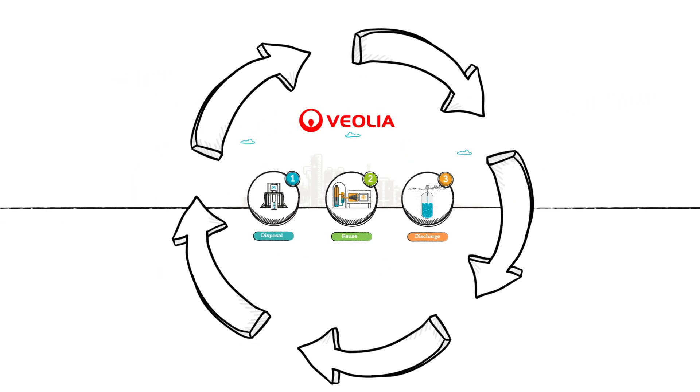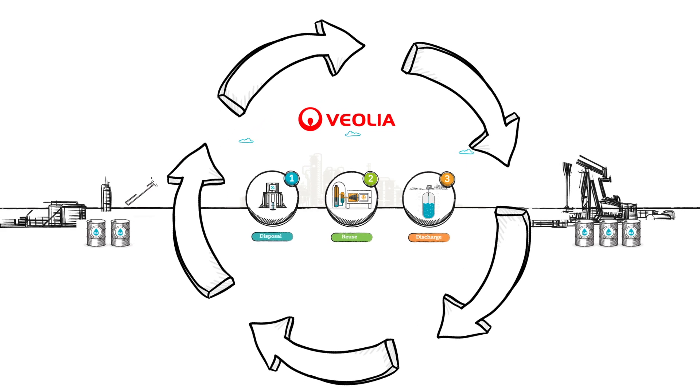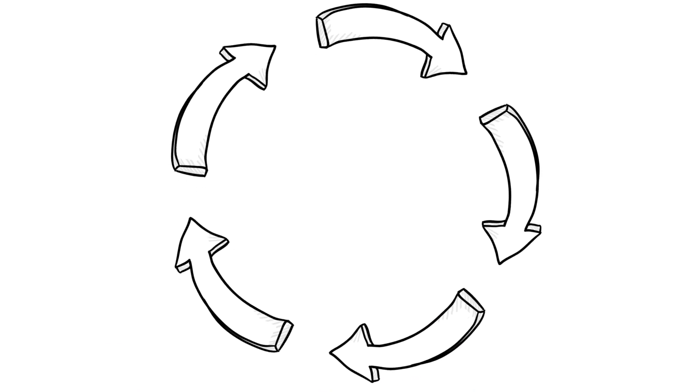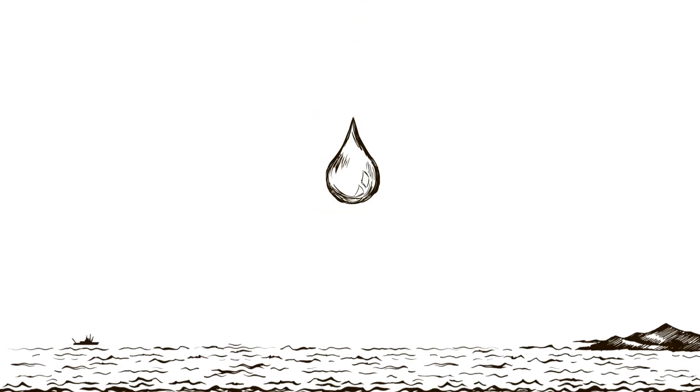Veolia can help you manage produced water to help you extract oil and gas in more sustainable ways and make the volume of produced water look like a drop in the ocean.